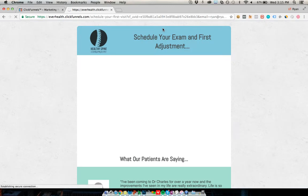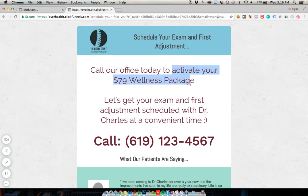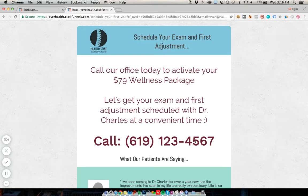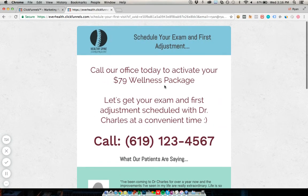They fill in their information and click 'Claim My Wellness Package,' then they go to the confirmation page. At this point you have their name, email, and phone number. We want to get them to take the next step and actually get scheduled, so the page says: 'Schedule your exam and first adjustment — call our office today to activate your package.' It's not activated yet; they need to call and take another step.